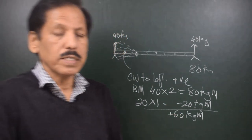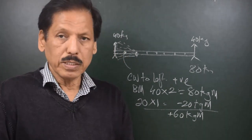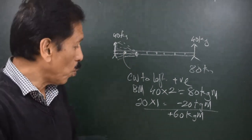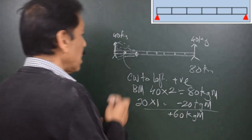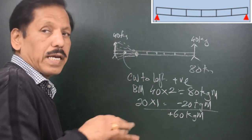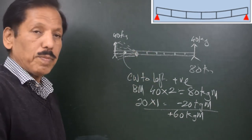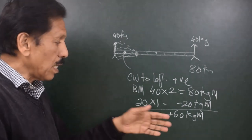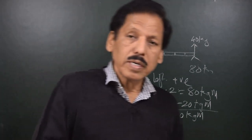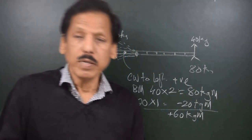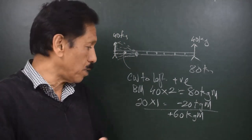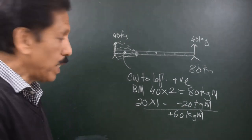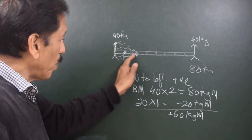According to our convention, a positive bending moment — meaning clockwise to the left of the point under consideration — is positive, and positive means sagging. There is a tendency for this point to sag with a bending moment of 60 kg·m. The real unit of bending moment would be Newton·meters: 60 × 9.81 Newton·meters is the bending moment at this point.